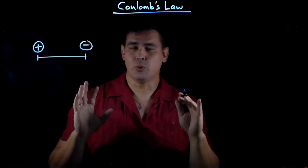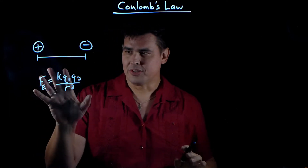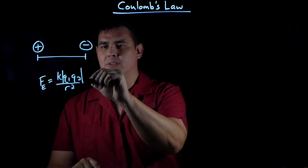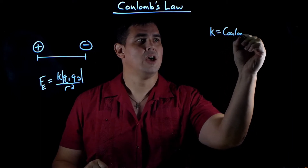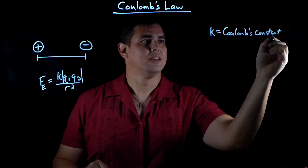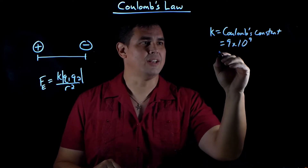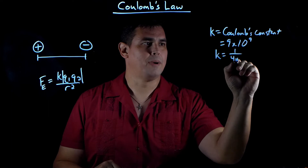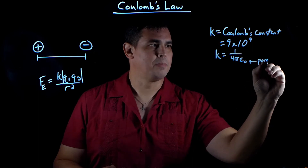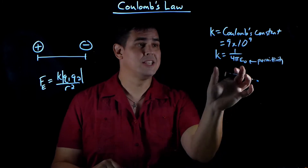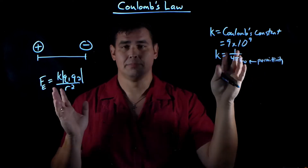To find that, we're going to need Coulomb's Law. K is called Coulomb's Constant, and it's about 9 times 10 to the 9th. Sometimes you might see K written as 1 over 4 pi epsilon-zero, where epsilon-zero is called the permittivity of free space. You'll see this on your formula sheet — K is either 1 over 4 pi epsilon-zero or 9 times 10 to the 9th. It's just a constant.